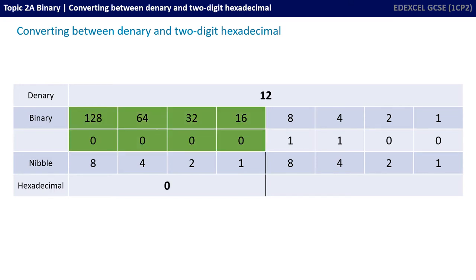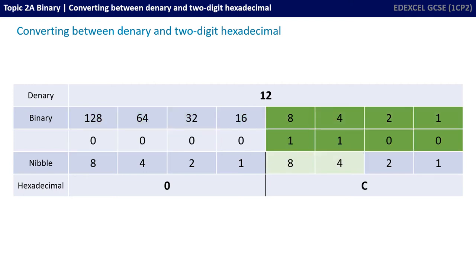To convert this number into hex, we group our binary into nibbles — that's groups of 4. So we have four 0s here; 0 is obviously 0, and we don't actually need this number, but we're showing it for completeness. We then group the next nibble: we have a 1 in the 8 column and a 1 in the 4 column, which gives us 12. And remember that 12 in hex is C. So the denary number 12 in hex is 0C, or more simply put, just C.